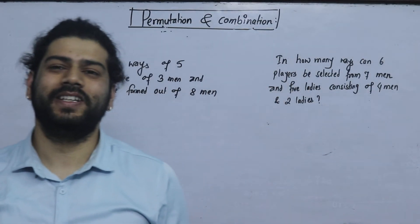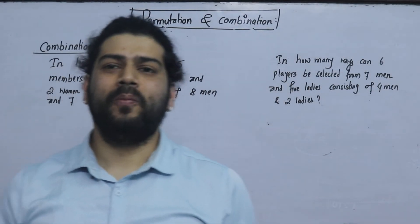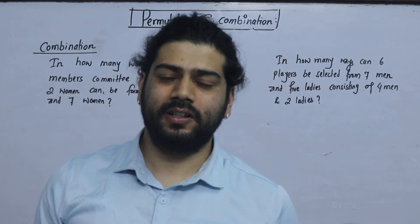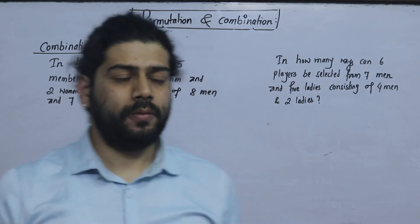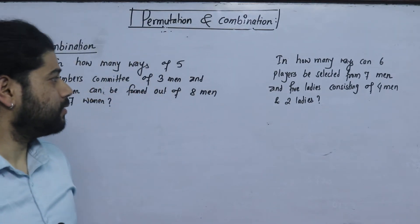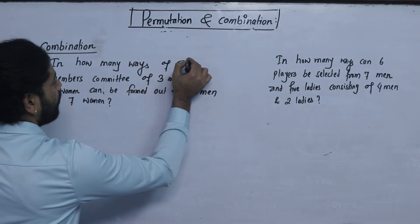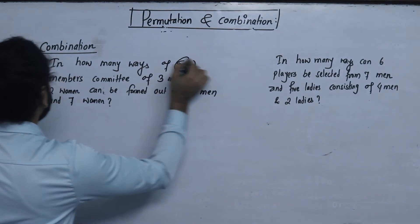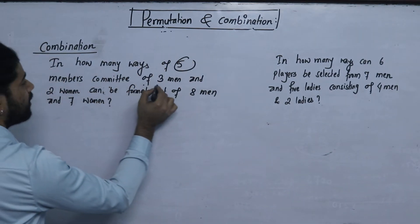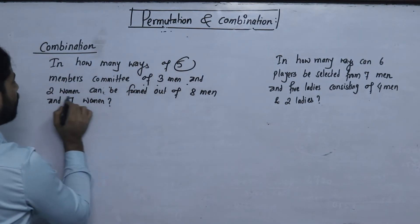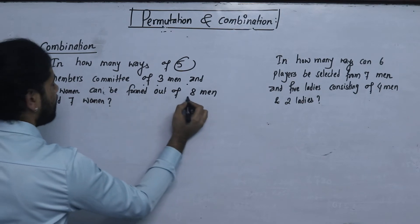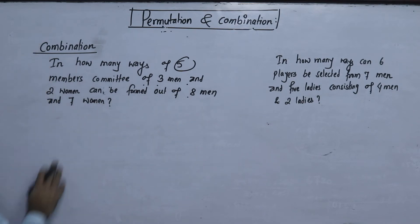Namaskar! I am going to talk about the combination question for Plus Two Business Mathematics. The data question is: In how many ways can a five-member committee of three men and two women be formed out of eight men and seven women?